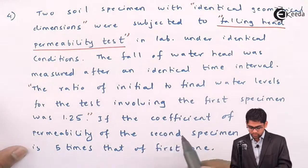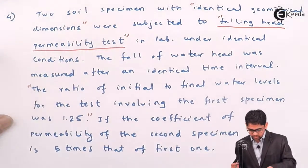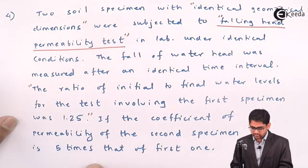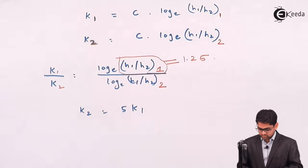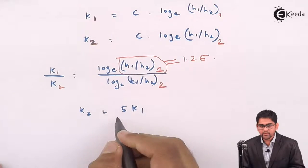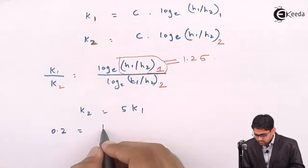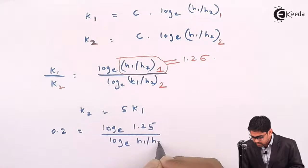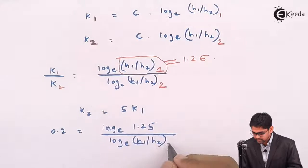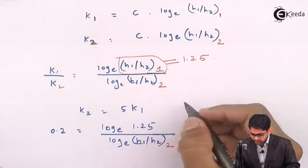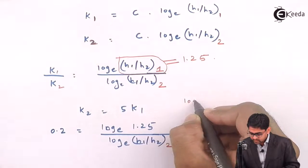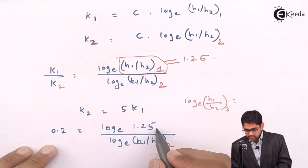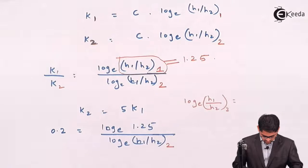Substituting into the ratio equation: 0.2 = ln(1.25) divided by ln(h1/h2)₂. Solving for ln(h1/h2) of the second specimen gives: ln(h1/h2)₂ = ln(1.25) divided by 0.2, which evaluates to approximately 1.116.